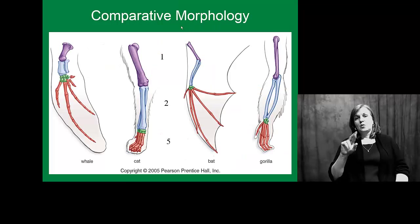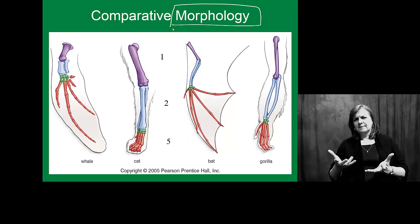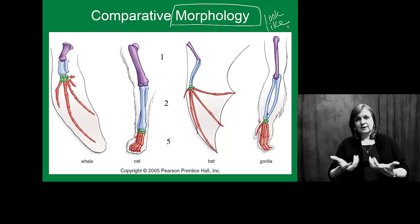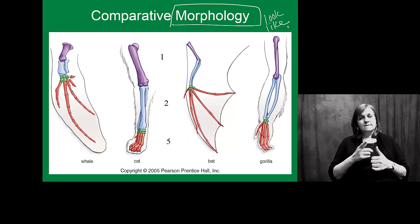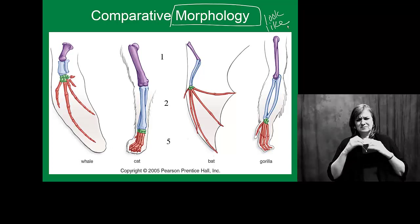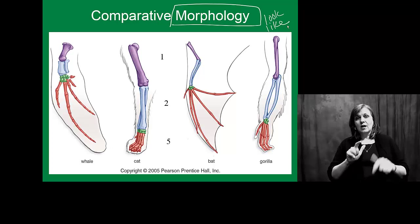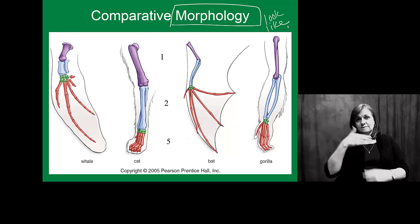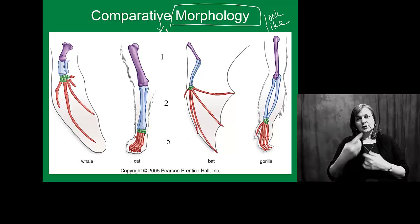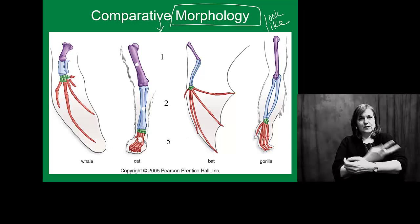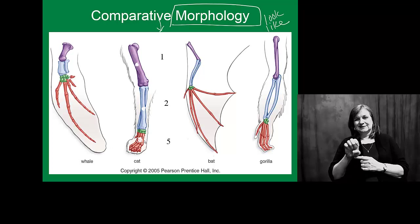We'll look at something known as comparative morphology. What is morphology? It's what you look like — your structures, characteristics of your skeleton, and so on. In this example, I show you a comparison between a whale, a cat, a bat, and a gorilla. You might not think those things have anything in common, but they're all mammals and have a very similar forelimb structure. A whale and a bat don't have a front leg per se, but they have a modified front leg. All of them fall into this one, two, five characteristic — meaning they have one bone, two bones, and five distinct bone structures. I have them color coded here for you to see.